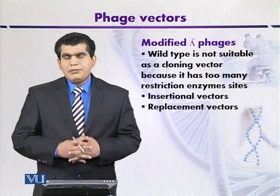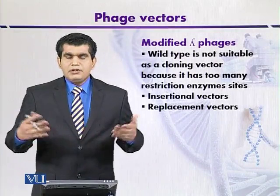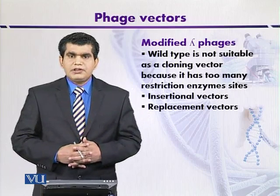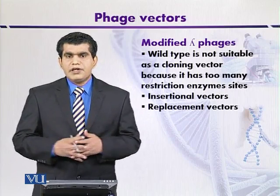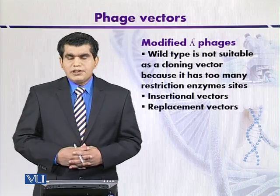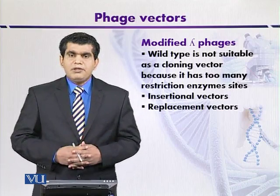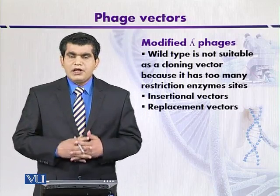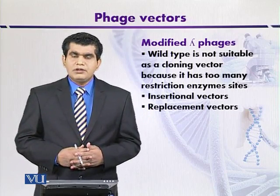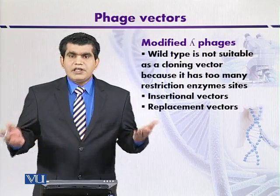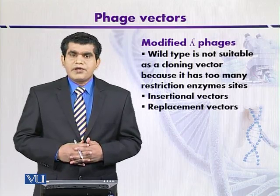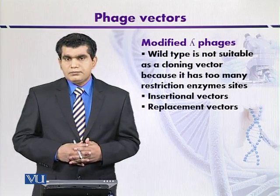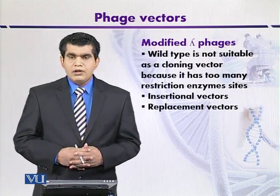Although wild-type lambda phages can be used as a cloning vector, because of some characteristic features, it is not so good to transform foreign DNA into the host organism. The reason is that it contains multiple restriction sites for different types of endonucleases. If the genomic DNA of the lambda phage contains different restriction sites for the same enzyme, it can cause fragmentation of the lambda genome, making it not valuable for gene cloning procedures.